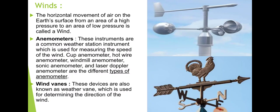Beginning with wind — what is wind? Wind is the horizontal movement of air on the earth's surface from an area of high pressure to an area of low pressure. Air always moves from high pressure to low pressure, and that movement of air is considered as wind.